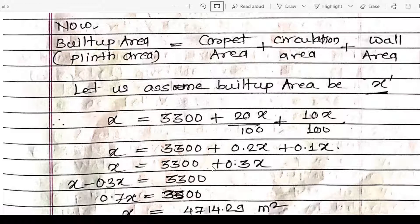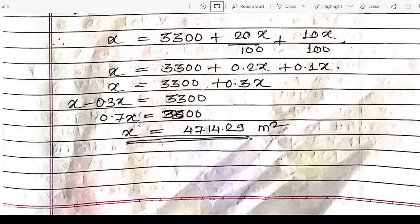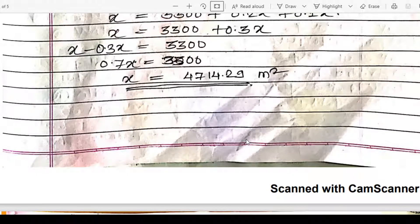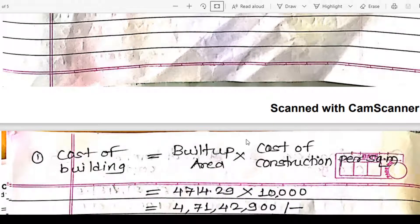Then x = 3,300 + 0.3x. Moving 0.3x to the left side: x minus 0.3x = 3,300, so 0.7x = 3,300, giving x = 4,714.29 square meters. This is the built-up area of the building, which is also the plinth area.